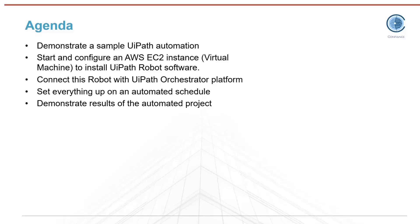Once that's all set up, we'll configure everything to run on an automated schedule. For AWS, that means having the EC2 instance be started and stopped on a schedule, and for the RPA side, Orchestrator will trigger the process to run during the same time window that the EC2 instance is up and running. Then after a few days, we'll come back and check out the results from the automated project.